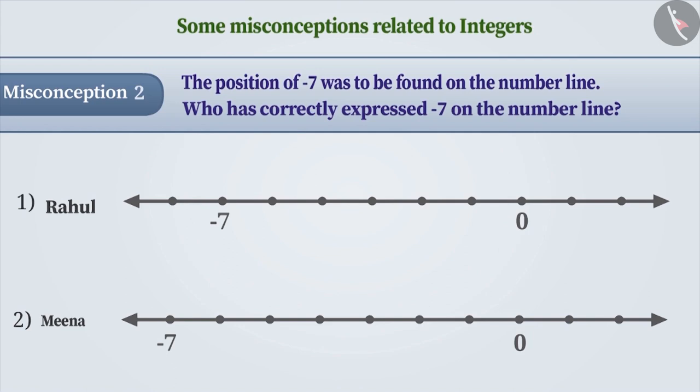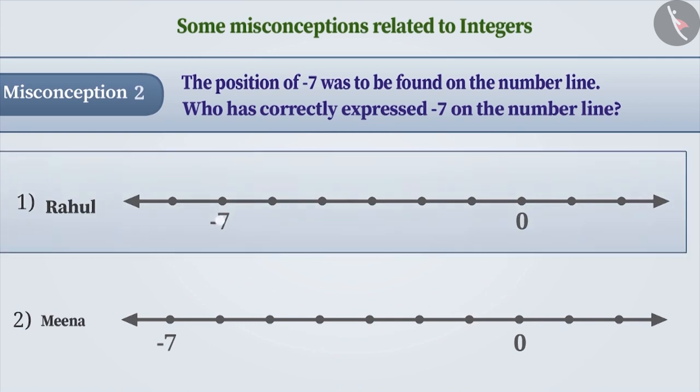Many times, children know that the positive integers on the number line are expressed to the right of 0 and negative integers to the left. But mistakes are made while finding the position of the number. For example, to express minus 7, Rahul assumed 0 to be the first position. Then the point to the left of that, the second position, and so on till the seventh position. And thus, he expressed minus 7 in the wrong place.